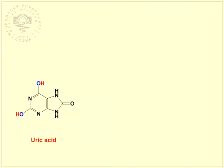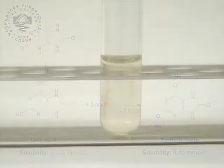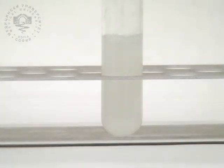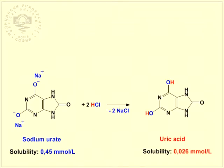Uric acid in water solution exists in two tautomeric forms. In interaction with sodium hydroxide, sodium urate is formed. Its solubility in water is considerably higher in comparison with uric acid, due to the ionic links between the sodium and oxygen atoms. The solution becomes turbid when neutralized by hydrochloric acid, and the less soluble uric acid is formed again.